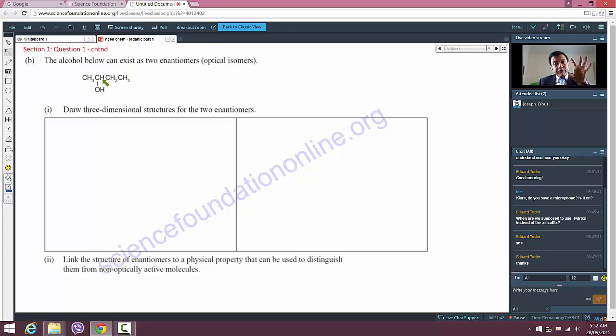No amount of turning around the bonds can make those two structures superimposable. The thing with optical isomers is this: a structure and its mirror reflection are non-superimposable. When does that happen? When you have a carbon atom connected to four different groups. As you can see, that's the case here.